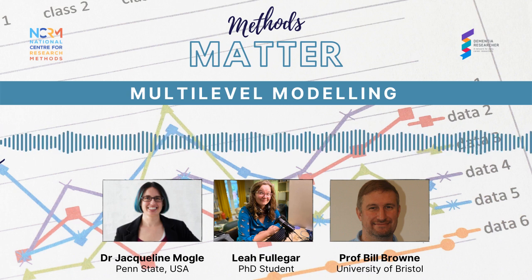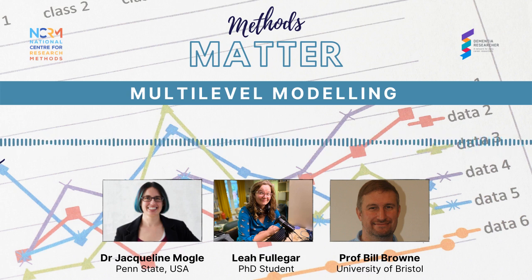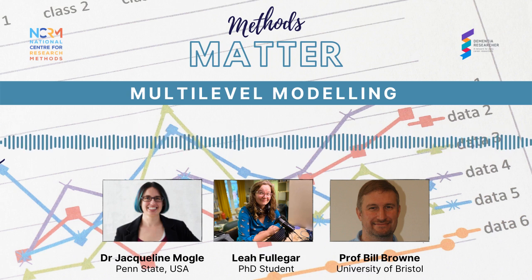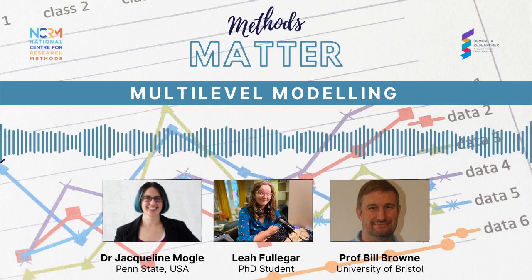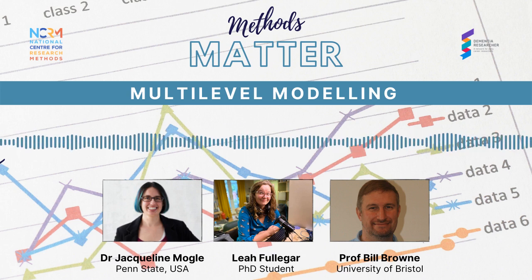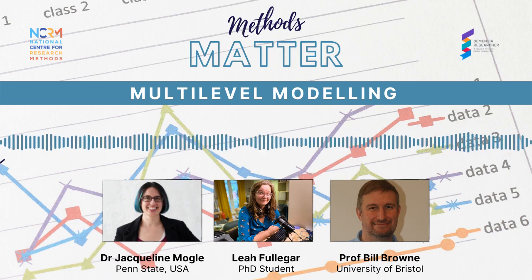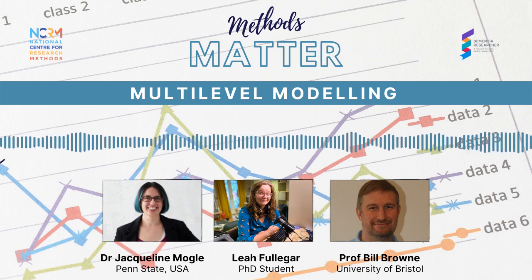The same person comes back to the clinic completing measures multiple times across years — all data generated by the same individual, so we expect correlation across observations. We want to look at how cognition is changing over time and account for the fact that different people start with different levels of cognition — they join our studies at different points in their trajectory. The multilevel model can accommodate those differences across individuals, so each person can have their own starting point rather than making everyone start in the same place.